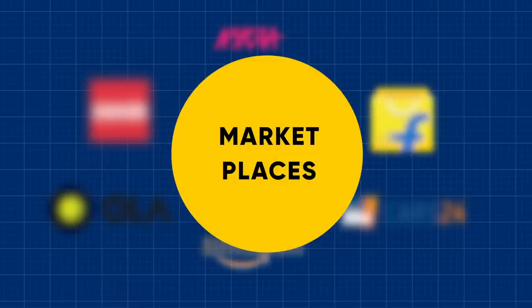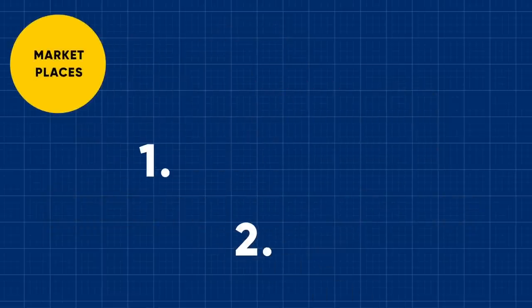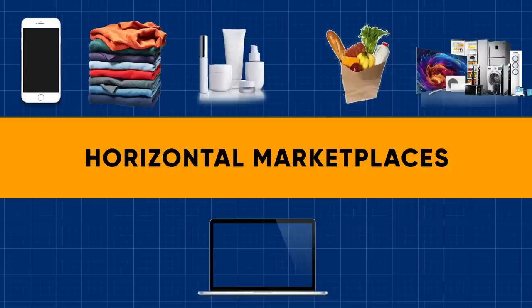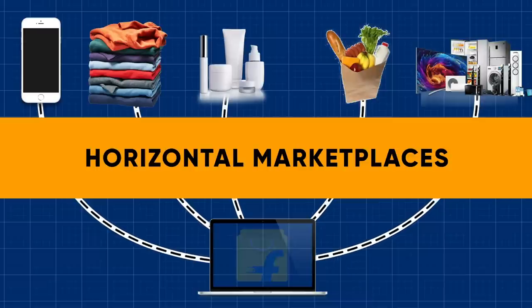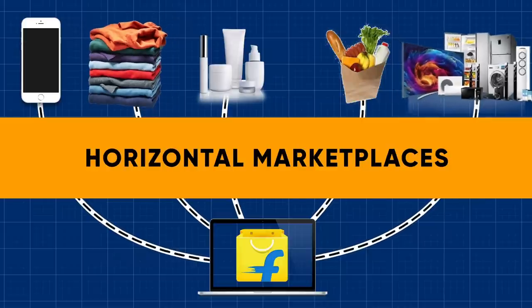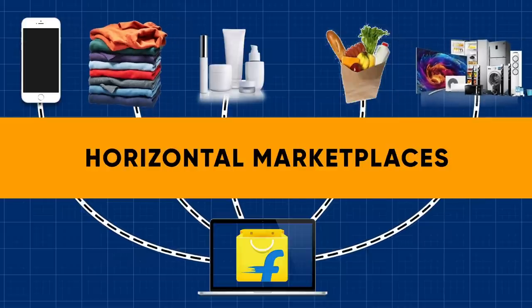But one thing that I haven't talked about yet are the two categories of marketplaces: horizontal marketplaces and vertical marketplaces. Horizontal marketplaces offer products across different categories on a single platform with a similar level of service. For example, customers can buy products on Flipkart ranging from groceries to mobile phones to fashion to electronics. Flipkart basically has everything.